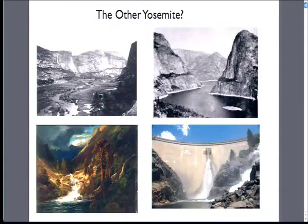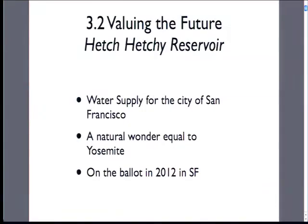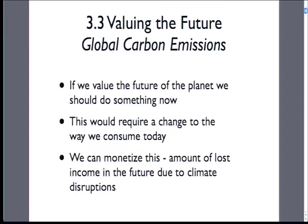Going back to lecture three, we were talking about different types of market failures to motivate environmental economics. I was talking about Hetch Hetchy Valley — there are pictures of the before and after, and a dramatic romanticized painting of the before and after with the dam that supplies San Francisco with electricity and drinking water. This is a classic question of people who made the decision over 100 years ago having different time preferences for wilderness than we do now. Some people in San Francisco are trying to get it on the ballot to remove this dam and restore the valley — a classic example of preferences for the environment being different across time periods, a market failure of communication between two time periods.